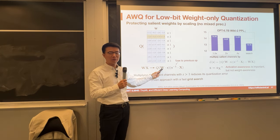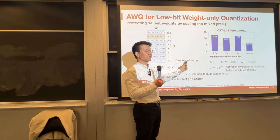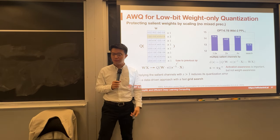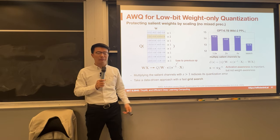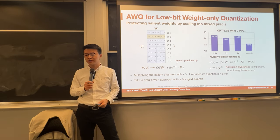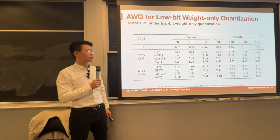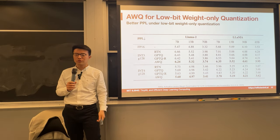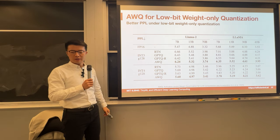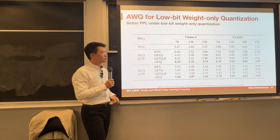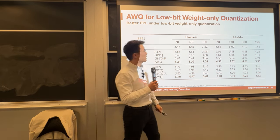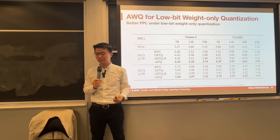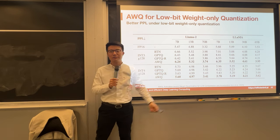We multiply W times S and X divided by S; the division by S can be fused into the previous operation or into the layer norm. We take a data-driven approach to do a fast grid search for the best scaling factor greater than 1. Later follow-up work even proposed a learning-based method using gradient descent to learn the best scaling factor. Results on 3-bit, group size 128, for LLaMA and LLaMA 2 show AWQ consistently outperforms round-to-nearest, GPTQ, and GPTQR from 7B all the way to 30B models.